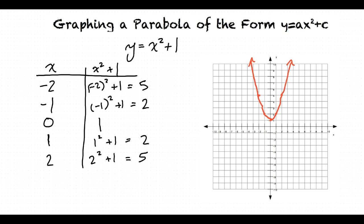Okay, so we first find the vertex by plotting 0 comma c, and then we plot a few points on either side of the vertex to find the final parabola. Correct, you developed a good understanding.